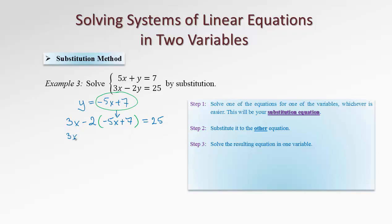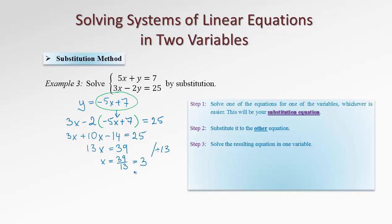We open the bracket, distribute the negative 2: two negatives make a positive, giving 10x, and negative 2 times positive 7 is negative 14, equals 25. Collecting like terms, we obtain 13x, then bring the 14 to the other side, adding 14 to 25, leaving us with 39. Finally, divide by 13 and we end up with x equals 39 over 13, which is 3.